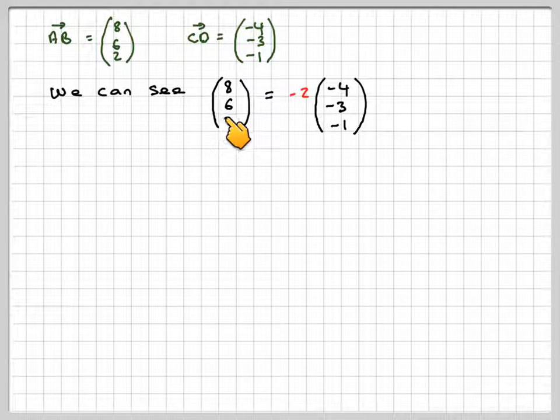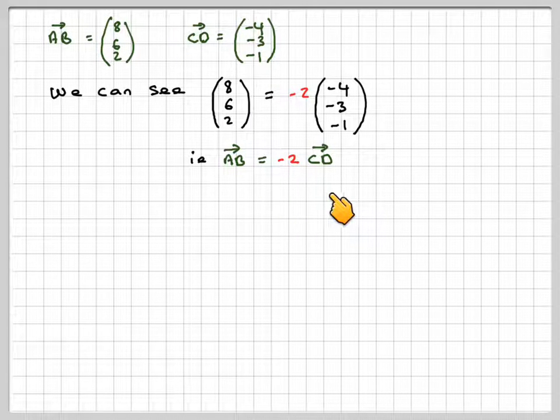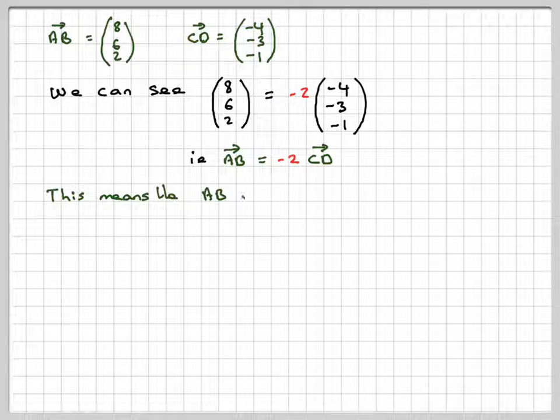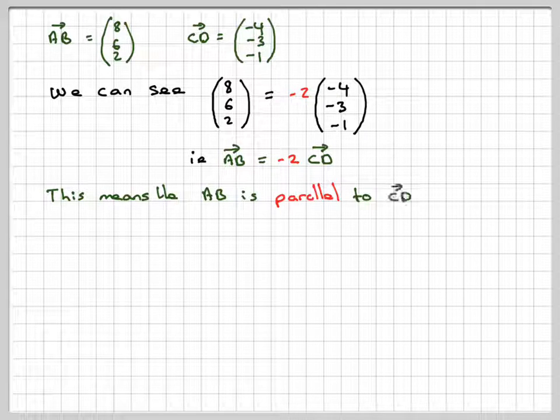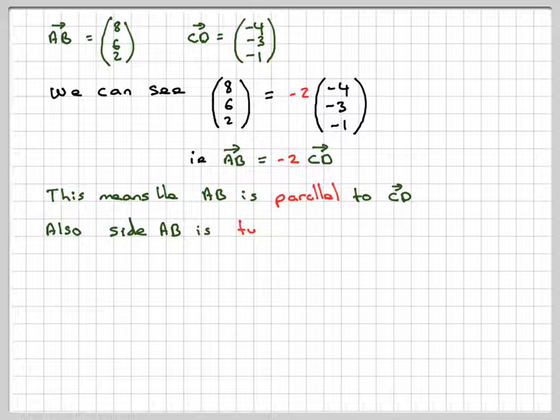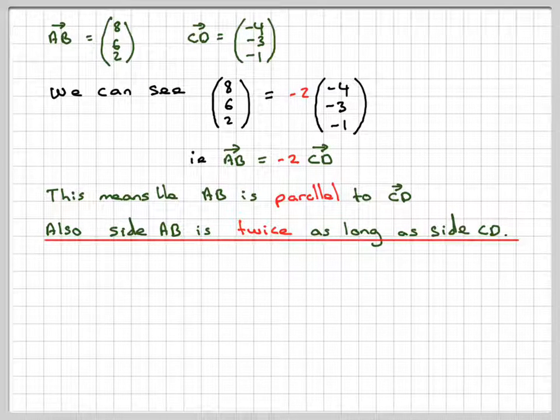We could have said that this one is minus 1 half times this one. So what we said here is that AB is minus 2 times CD. And if that is true, then AB and CD are parallel. This means that AB is parallel to CD. And because we've got a 2, it doesn't matter if it's minus 2, then we can say that the side AB is twice as long as side CD.